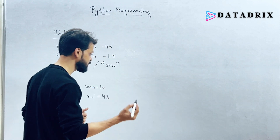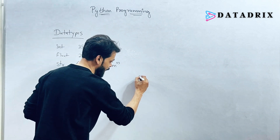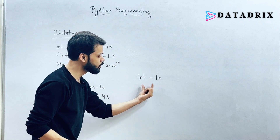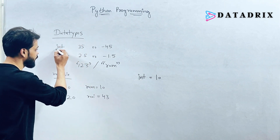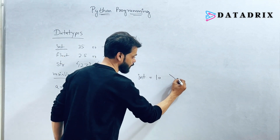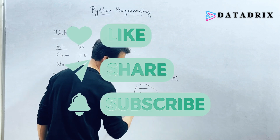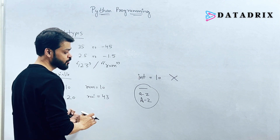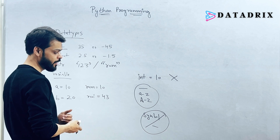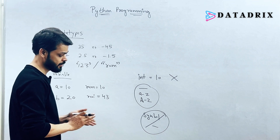Keywords are words that convey a special meaning to the language compiler. For example, 'int' is a reserved word in Python, so we cannot use 'int' as a variable name — that would be incorrect. The second rule is: a variable should start with an underscore or letters — small or capital. The third rule is: a variable should not have any symbol except the underscore.